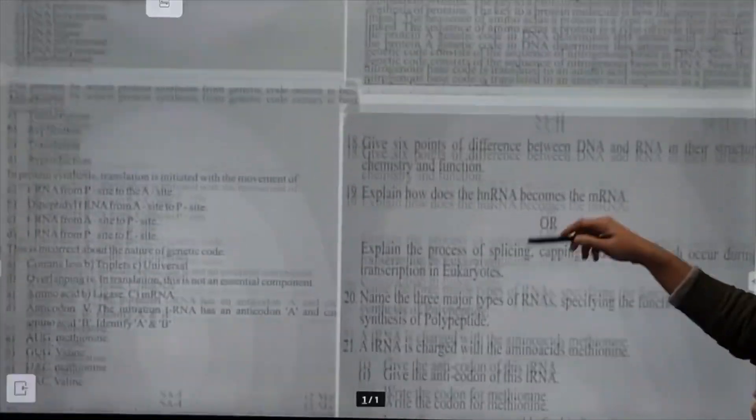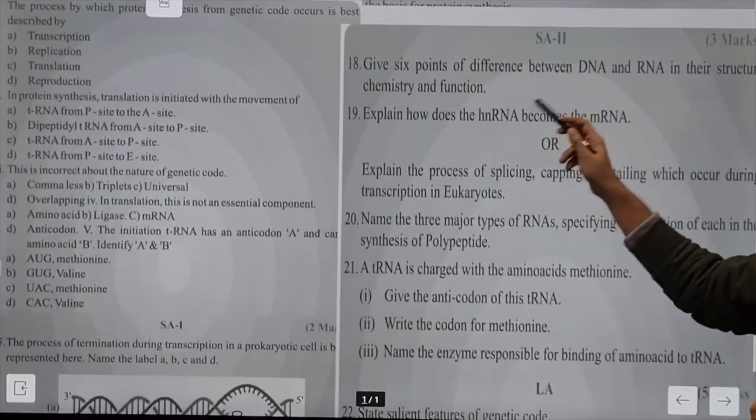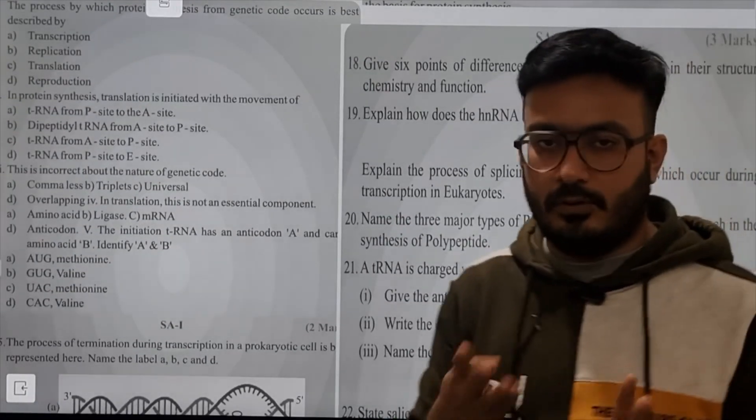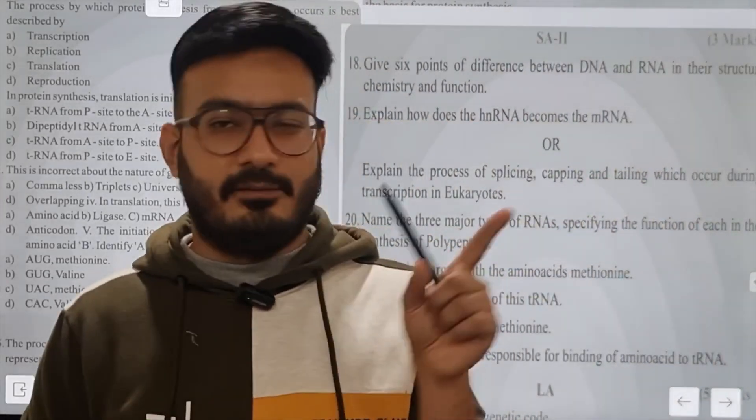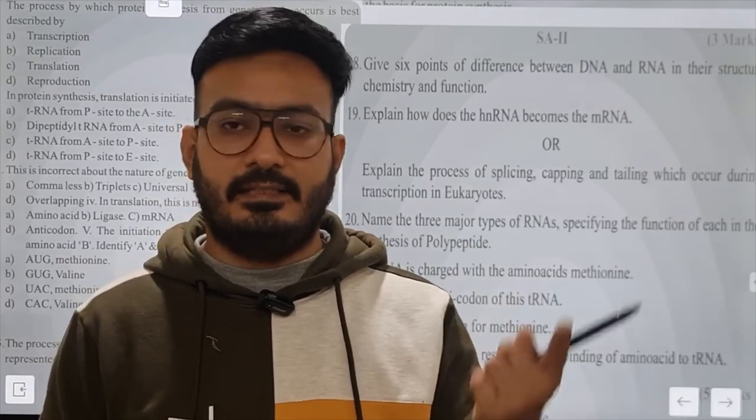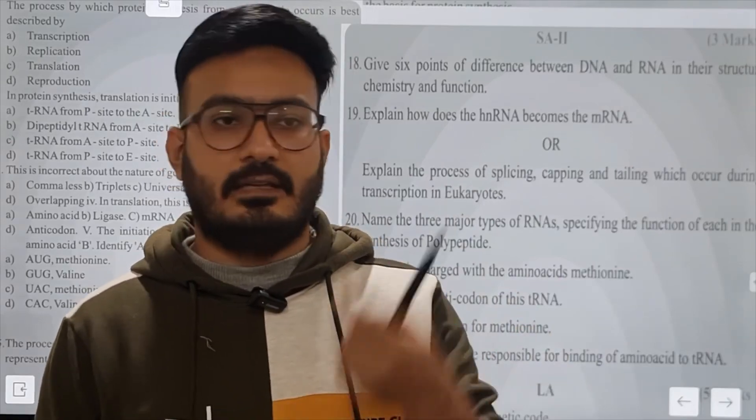You can give six points of difference between DNA and RNA in terms of chemistry and function. DNA has deoxyribose (2-deoxyribose) sugar while RNA has ribose. DNA bases are A, G, C, T while RNA has A, U, G, C.